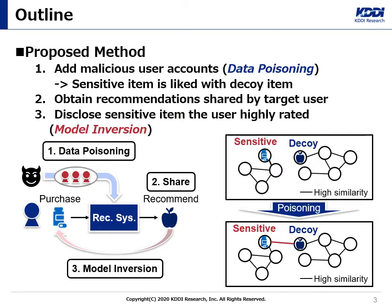Our model inversion attack is based on data poisoning attacks. Namely, the adversary first adds multiple malicious user accounts to a target recommendation system. Data poisoning is performed to change the system's recommendation model to a target model. We define the target model so that some non-sensitive decoy items chosen by the adversary will be recommended to a user who buys or highly rates a particular sensitive item. Then the adversary gets the public output of the recommendation system. Due to the widespread use of social networks, it has become common for users to share their personal non-sensitive recommendations. Finally, the adversary performs model inversion: when the decoy items are recommended to the user, the adversary will be able to infer that the user had rated the sensitive item with high probability.